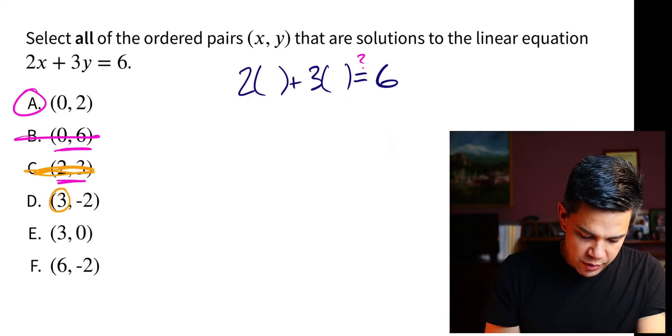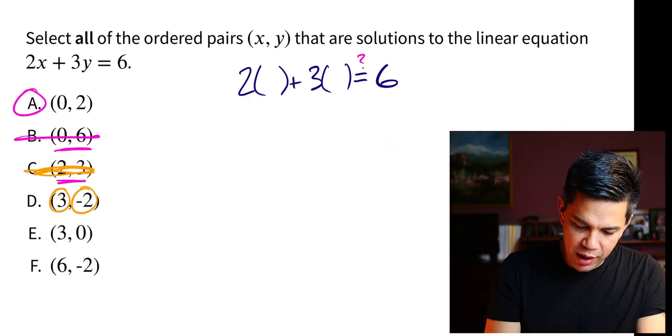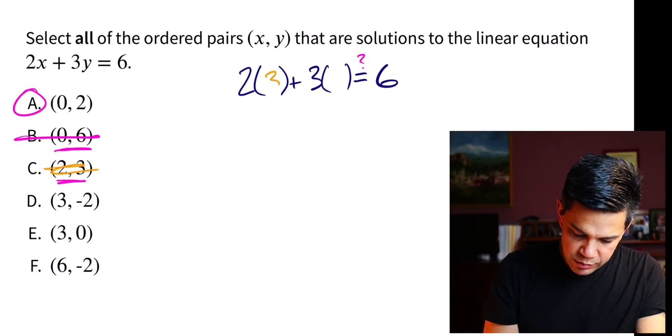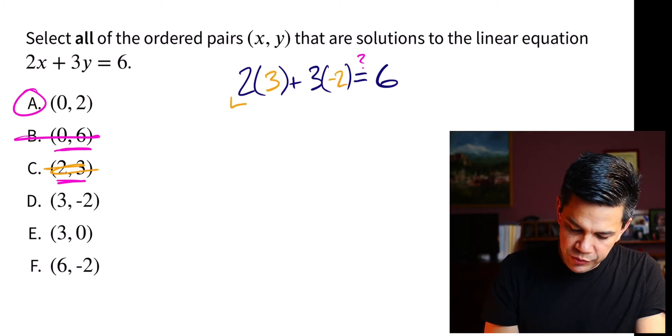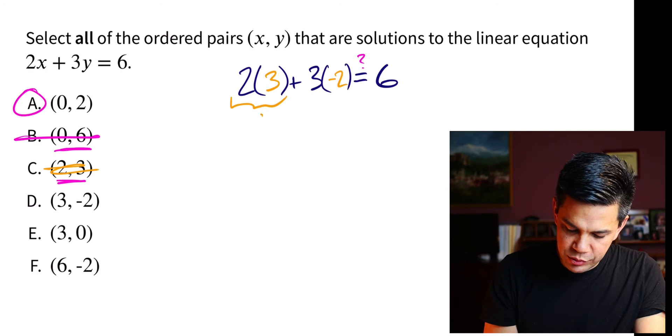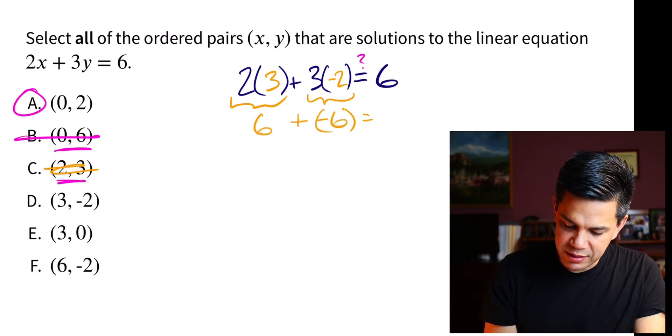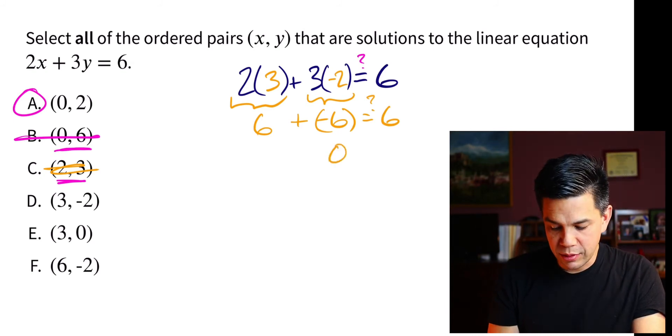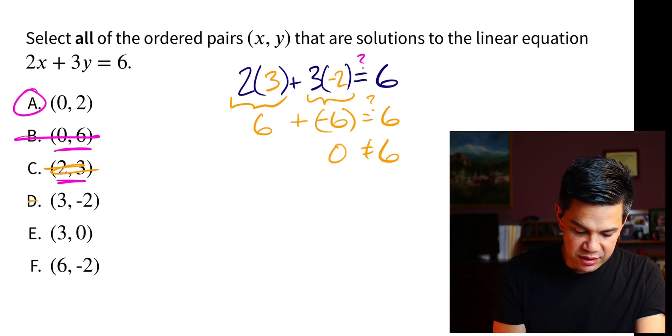All right, let's try the next one. X value is 3 and our y value is negative 2. So 3, negative 2. 3 times 2 is 6 plus 3 times negative 2 is negative 6. Does that equal 6? Well, of course, 0 does not equal 6. So D is not going to work either.